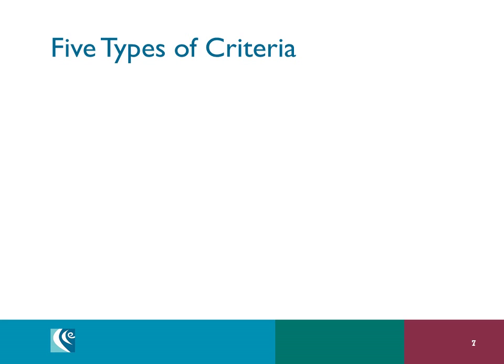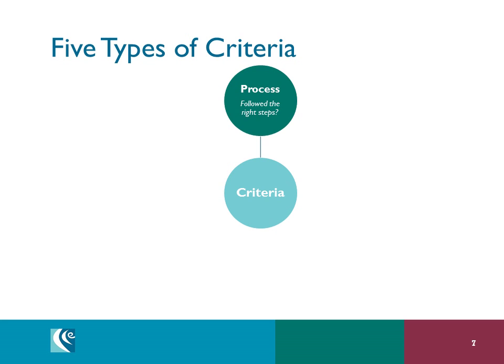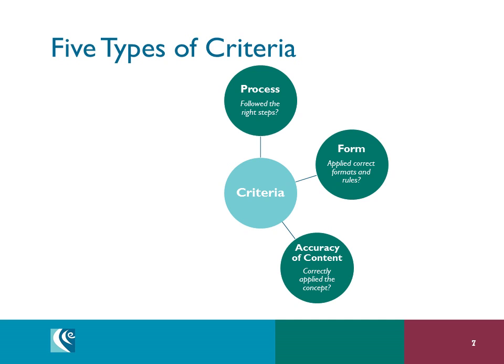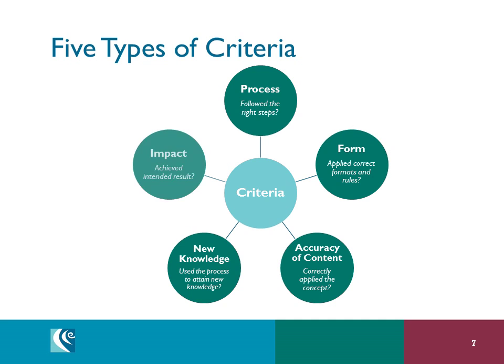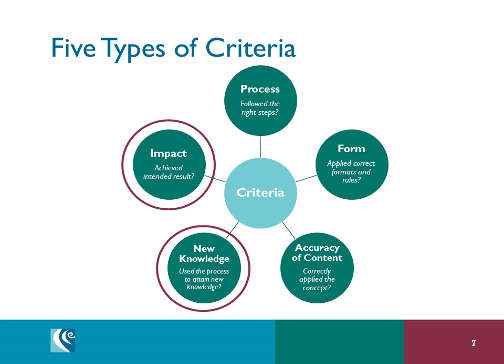Rubrics have different kinds of criteria, and in a complex performance assessment all of these types may be used. Did you follow the right steps? Did you apply the correct rules and formats? Is the answer correct? Is the concept understood and correctly applied? Did the student use processes to attain new knowledge and ask new questions? Did the product achieve its intended result? Ultimately, we want students demonstrating achievement at a depth of knowledge three or four level. The process, form, and accuracy criteria typically lead up to deeper thinking in new knowledge and impact. The appropriate level can be determined by looking at the language in the learning target itself.